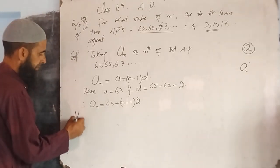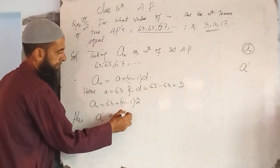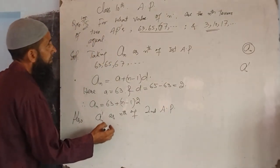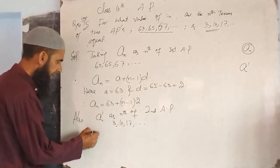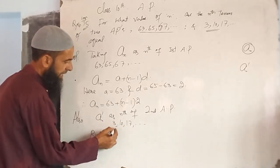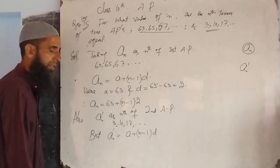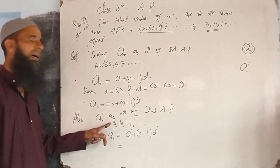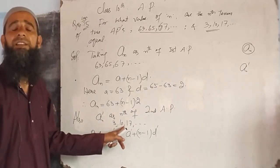Also, A'n as nth term of second arithmetic progression. Second AP is 3, 10, 17 and so on. Iska nth term hai. A'n is equal to A dash plus n minus 1 into D dash. A dash is first term of this arithmetic progression. D dash is common difference of the second arithmetic progression.